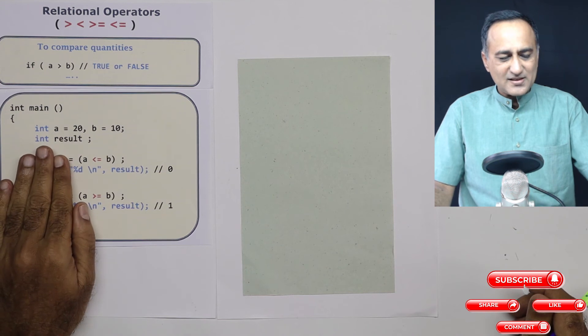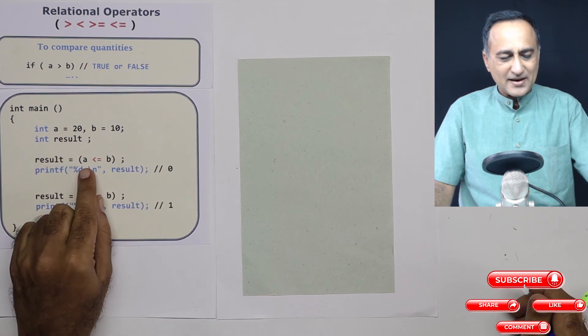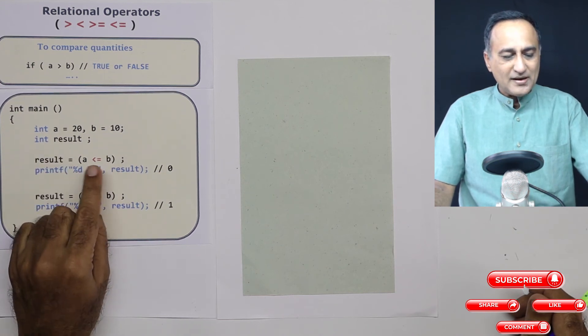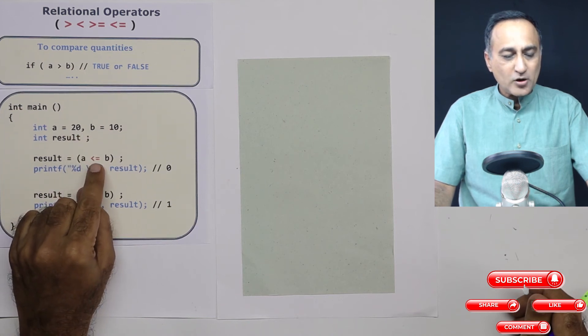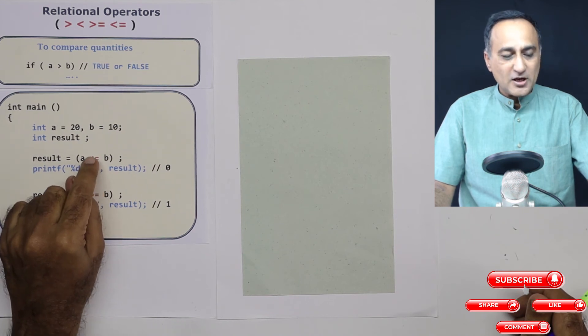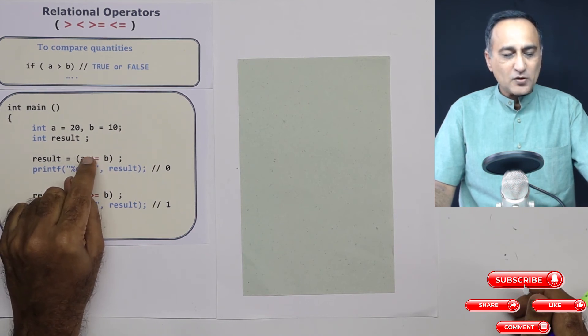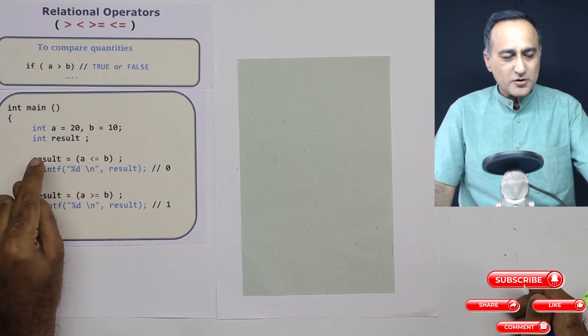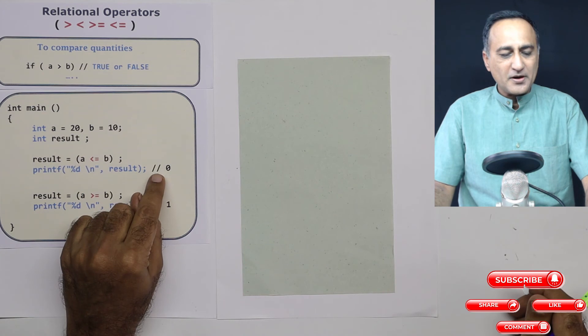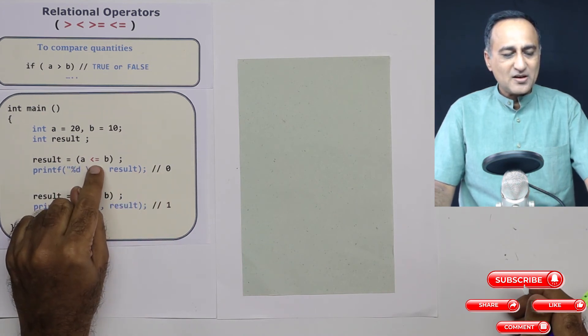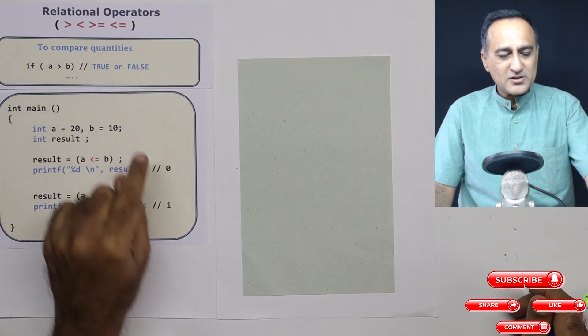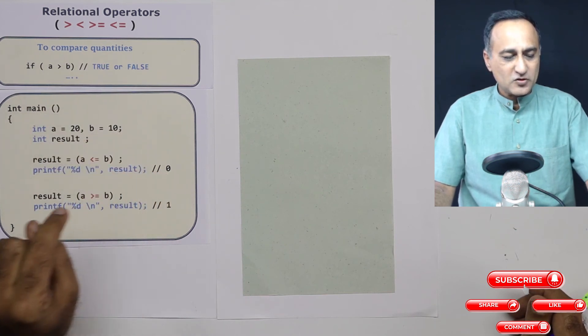Now, suppose I say forget this left hand side, suppose I say in bracket A less than or equal to B. Here 20 is definitely not less than nor equal to 10. So the result of this is going to be false. So this bracket is going to contain the answer zero, zero is going to be copied to result. So when I print result, it's going to print a value zero. So the result of this comparison had to be either true or false. In this case, it happened to be false or zero.